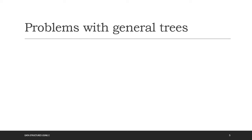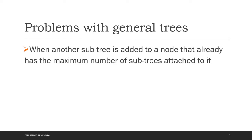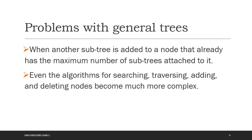You can see the problems with general trees. The first problem arises when another subtree is added to a node that already has the maximum number of subtrees attached to it — this causes a structural problem. The second problem is that algorithms for searching, traversing, adding, and deleting nodes become more complex with general trees.